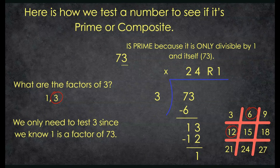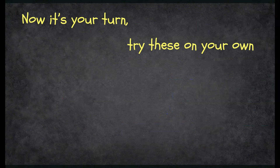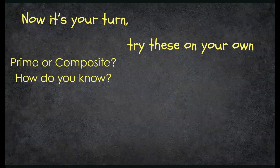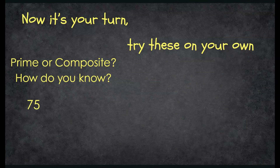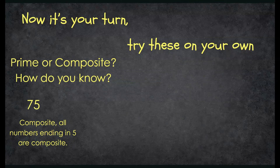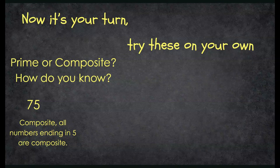So that's how we tell whether a number is prime or composite — we have to test it. It is now your turn. How do you know if these numbers are prime or composite? Go ahead and pause the video and test 75. 75 is a composite number. Remember our rules — all numbers ending in 5 are composite because they can be divisible by 5. 75 can be divided by 5 evenly.